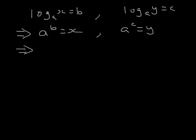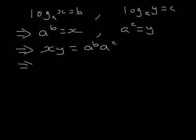Let's multiply these two equations together: x times y equals a to the power of b times a to the power of c. But the rules of indices state that a to the power of b times a to the power of c is a to the power of b plus c.